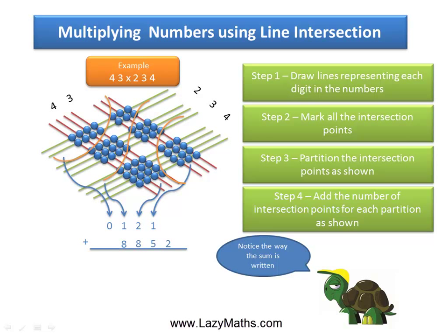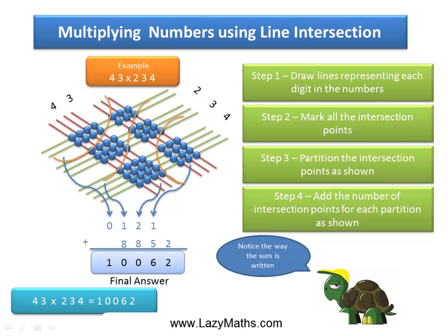We add these digits together: it comes to 2, then 1 plus 5 is 6, 2 plus 8 is 10 with 1 carryover, the 1 carryover plus 1 plus 8 gives us 10 again with a 1 carryover, and the 1 carryover and 0 gives us 1. So we get 10,062 as our final answer — 43 times 234 equals 10,062.